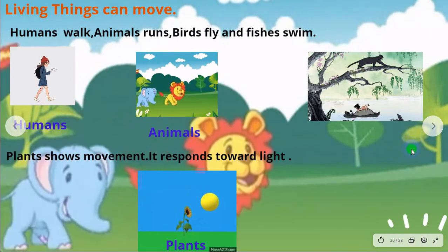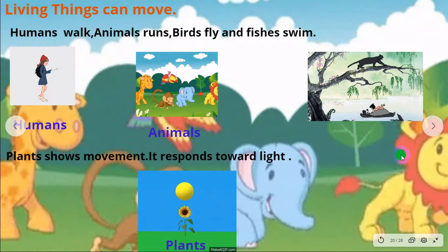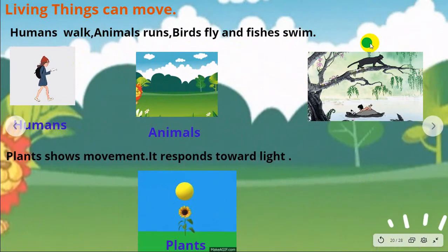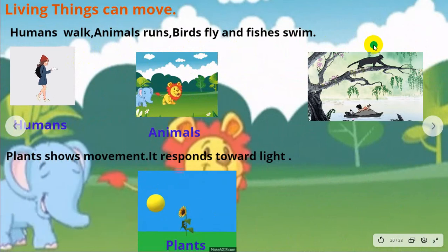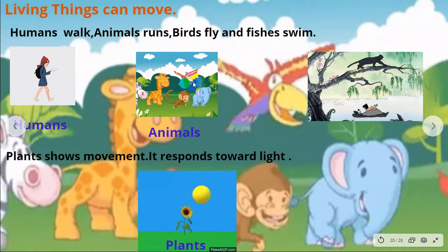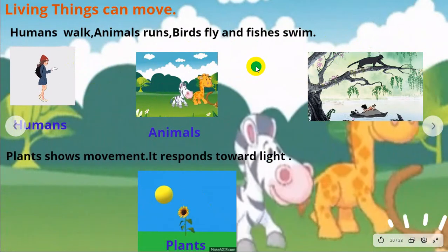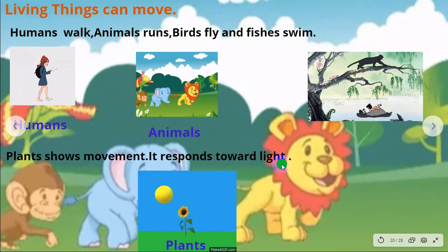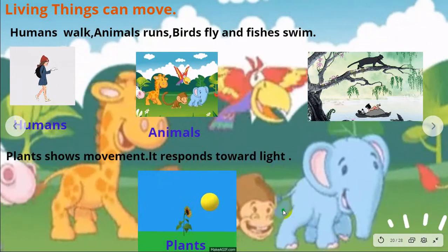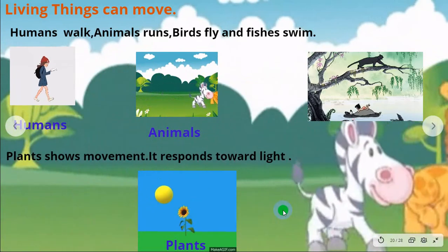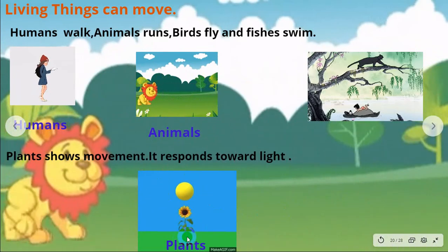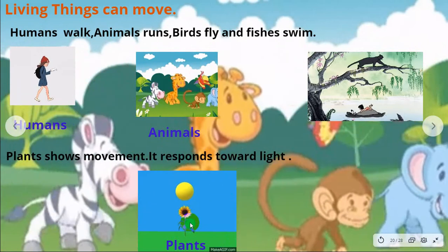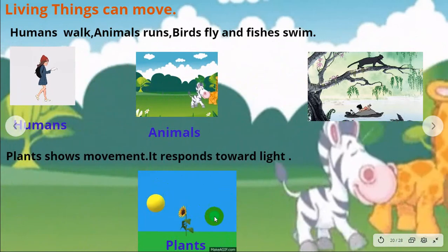Living things can move. Humans walk, animals run, birds fly and fish swim. Plants also show movement — they respond towards light. For example, a sunflower changes its direction to follow the sun as it moves across the sky.